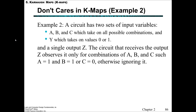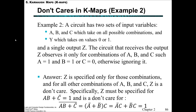Here's another example of don't cares in K-maps. We have a circuit with two sets of input variables: ABC, which take on all possible combinations, and Y which takes on values 0 or 1. We have a single output Z. The circuit that receives output Z is only used for combinations of ABC when A equals 1, B equals 1, and C equals 0; otherwise we ignore it. So no matter what the value of Y is — 0 or 1 — we don't care. Therefore Z is specified only for those combinations, and don't care for everything else.